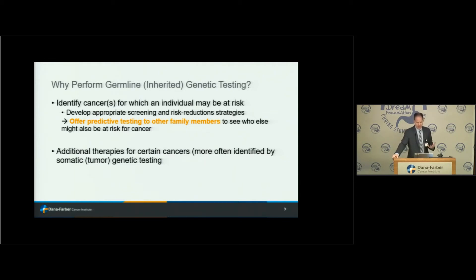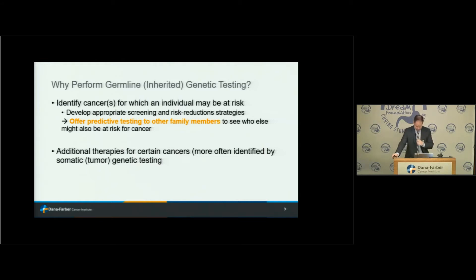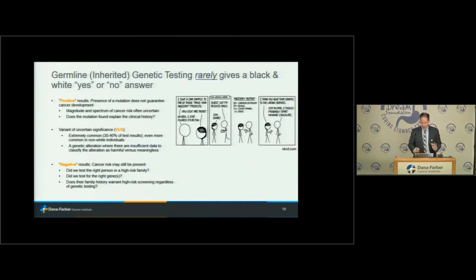Why would somebody undergo germline genetic testing? We're looking for the cancers for which an individual may be at risk. If we can identify a specific hereditary risk, we can develop appropriate screening and risk reduction strategies. Just as importantly, we can offer predictive testing to other family members. To a certain extent, germline genetic testing can also open the door to certain targeted therapies if the inherited alteration is felt to be important in how their tumor developed.